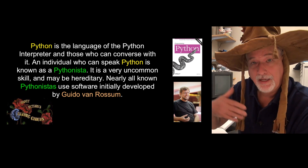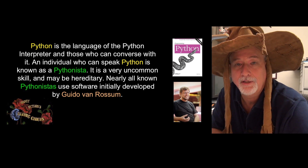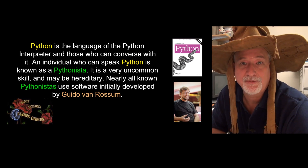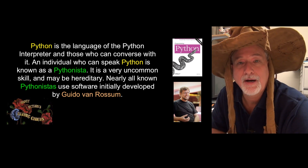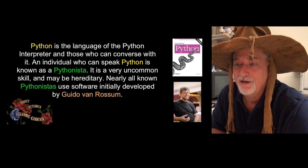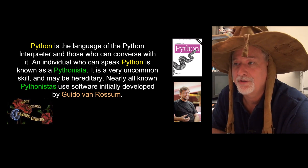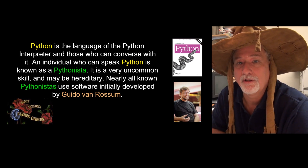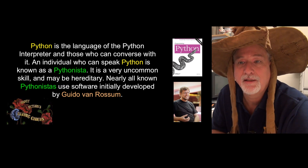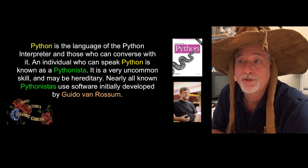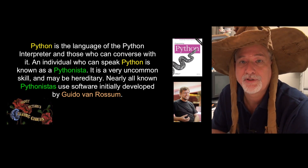Even though I'm using this whole snake-Slytherin thing, it turns out that Python was not at all named for Harry Potter, because Python was invented almost two decades before Harry Potter was created. And it wasn't for the snake — it was actually Monty Python's Flying Circus that was the inspiration for the name Python. Guido Van Rossum really wanted to create a programming language that, while powerful underneath, was also fun and approachable. And that's why Python has recently become so absolutely popular.